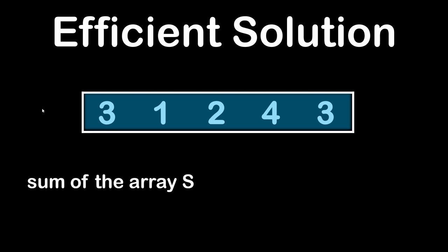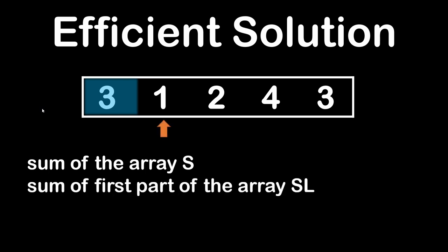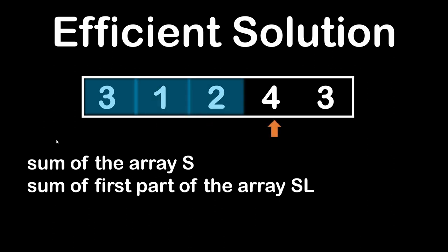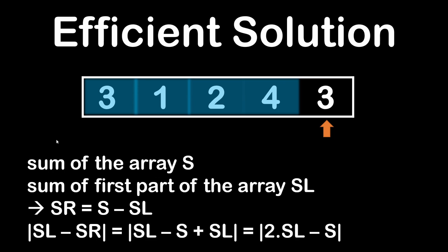A more efficient way would keep the number of array readings to a minimum. First, we compute the total sum of the array, calling it S. Then, with the separating position starting at the second element, we calculate SL, the left part sum. Since we already have the total sum and we just calculated the left sum, we don't need to traverse the array again for the right sum — we can simply subtract the left sum from the total sum to get SR. As we move through the array, we have both SR and SL in just one single pass, so we can calculate the required difference between those two terms.